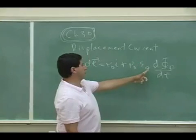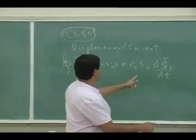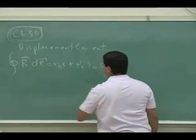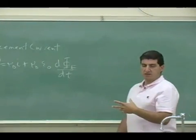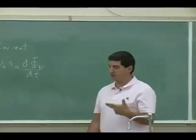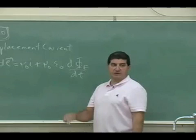You have mu zero epsilon zero times change in electric flux. So what this is telling you is besides current producing a magnetic field, if the electric flux is changing as a function of time, if the electric field is changing as a function of time, then it creates magnetic field as well.